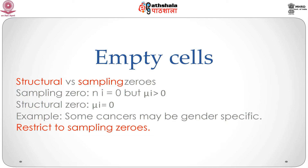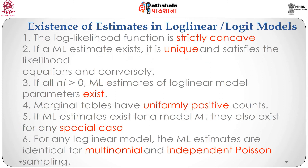Structural zeros can occur when, by the nature of the data, certain cells are bound to have zero counts. For example, in a cross-classification of cancer patients by gender, race, and type of cancer, some cancers such as prostate cancer and ovarian cancer are gender-specific, so certain cells will have structural zeros. For the remainder of the discussion we shall restrict ourselves to sampling zeros, which are a normal part of the data set and permissible under a Poisson or multinomial model. Sampling zeros can affect the existence of ML estimates of log-linear and logit model parameters.